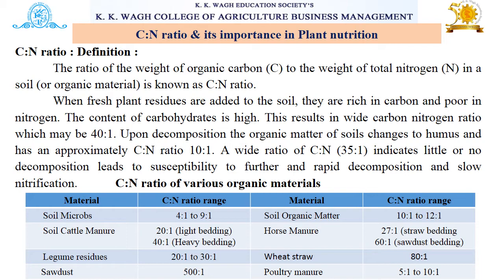A wide CN ratio of about 35:1 indicates little or no decomposition, leading to susceptibility to further rapid decomposition and slow nitrification. Here are some CN ratios of various organic materials: soil microbes 4:1 to 9:1; cattle manure 20:1 to 40:1; light bedding 20:1, heavy bedding 40:1; horse manure with straw bedding 27:1, with sawdust bedding 60:1; wheat straw 80:1; poultry manure 5:1 to 10:1; soil organic matter 10:1 to 12:1; legume residues 20:1 to 30:1; and sawdust 500:1.